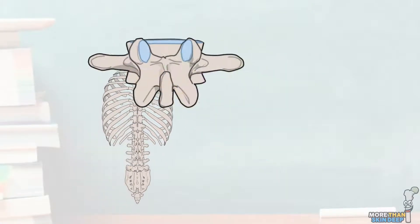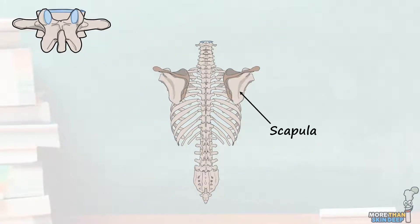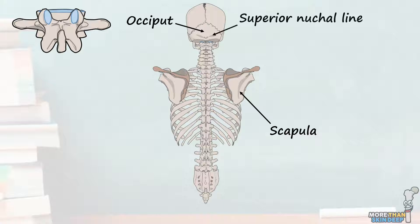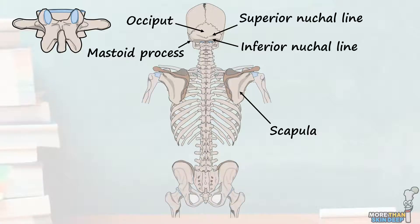The last bits of bony anatomy in the back that we need to know are the two paired scapulae, or shoulder blades, which we covered in much more detail in a previous video, and the posterior elements of the skull — namely the occiput, the superior nuchal lines, the inferior nuchal lines, and the mastoid process. I'll also add in the bony pelvis and the proximal parts of the humerus and femur to help contextualise the rest of the anatomy.